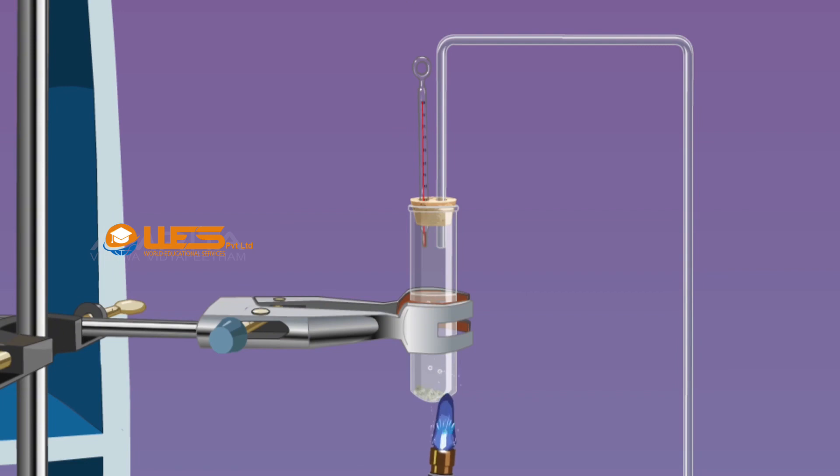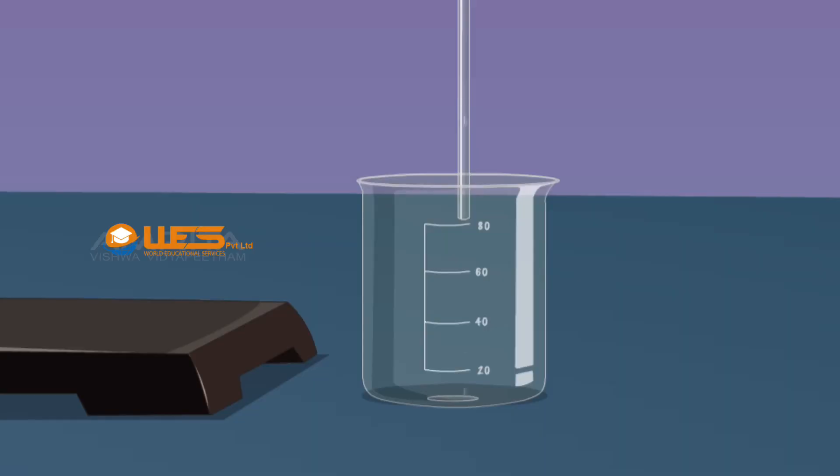On boiling, water is converted into steam which passes through the delivery tube, is condensed, and gets collected in the beaker.